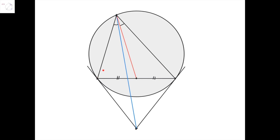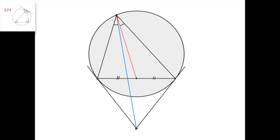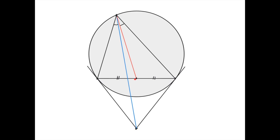Take a triangle, and let this be its circumcircle. Let these be the tangent lines to the circumcircle at this vertex and this vertex of the triangle, and let them intersect at this point here. Let this be the midpoint of this side of the triangle. The red line here is the median of the triangle. The blue line from this vertex to this intersection point, we're going to call the symmedian of the triangle.